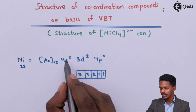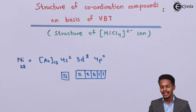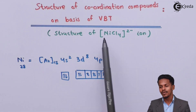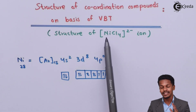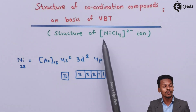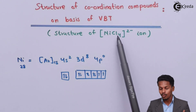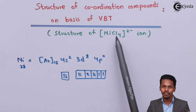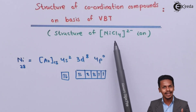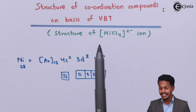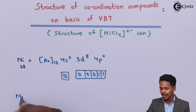The 4s orbital consists of 2 electrons. Now if we talk about the oxidation number of nickel in this complex, it has been found to be +2. The reason is that the chloride ion has an oxidation state of −1, so while calculating the oxidation number of nickel we get it as +2.